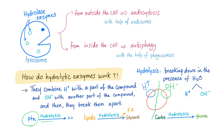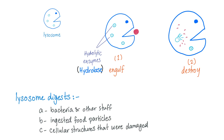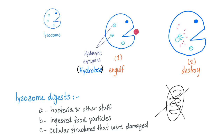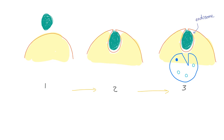Proteins broken down by hydrolysis yield amino acids. Lipids yield fatty acids and glycerol. Carbohydrates yield glucose. The lysosome engulfs a substance and destroys it using its hydrolytic enzymes. Lysosomes digest bacteria and other ingested food particles, as well as damaged cellular structures. Damaged mitochondria, for example, are digested by the lysosome to clean up debris — this is autophagy, with the help of the phagosome. In endocytosis, the endosome engulfs a molecule and the lysosome comes to digest it.